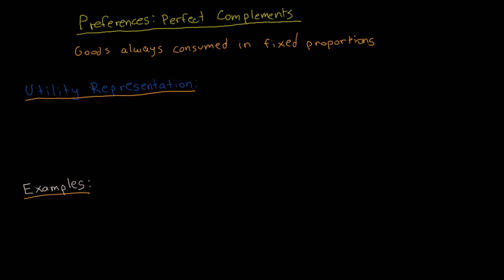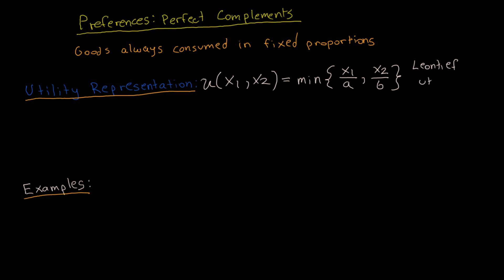I'm going to start off with the utility representation. We can write this as u, which is our utility function, as a function of two different goods — let's call them good 1 and good 2. That is equal to the minimum between two possible values: x1 divided by some parameter a and x2 divided by some parameter b. This utility function is known as a Leontief utility function.